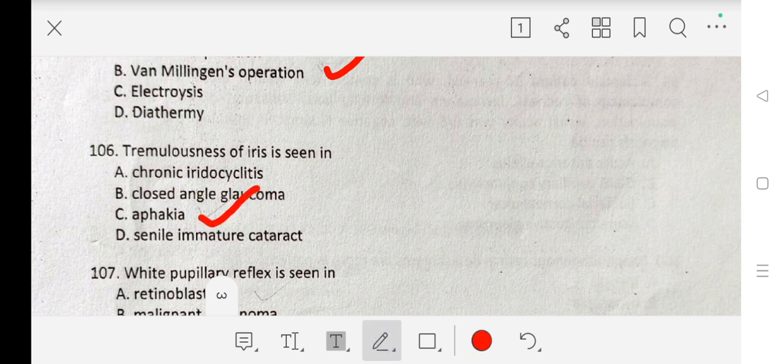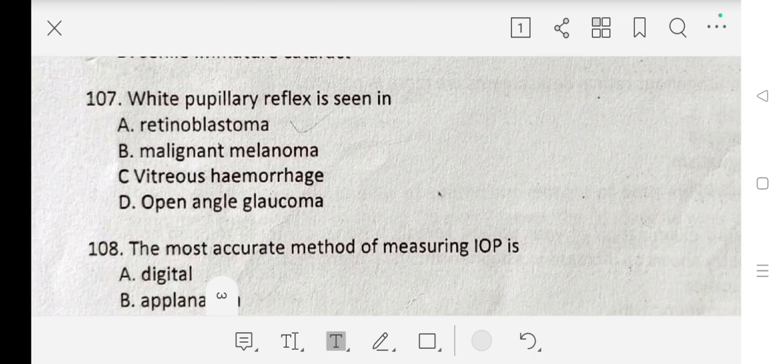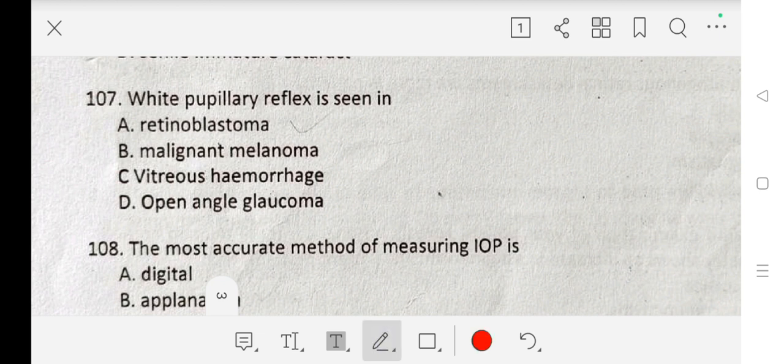Question number 107 is: White pupillary reflex is seen in A. retinoblastoma, B. malignant melanoma, C. vitreous hemorrhage, D. open angle glaucoma. Our correct answer is A. retinoblastoma.